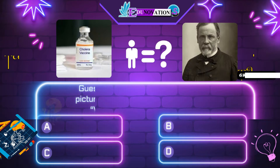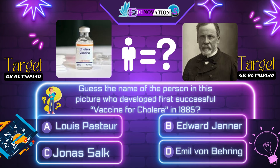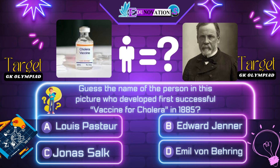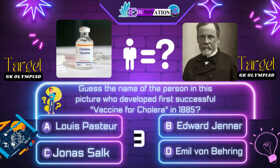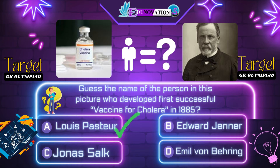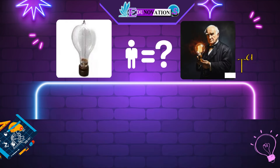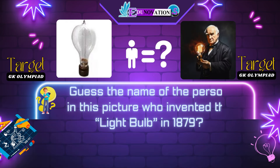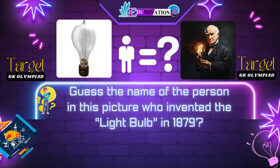Next question. Guess the name of the person in this picture who developed the first successful vaccine for cholera in 1885. Your options are: A. Louis Pasteur, B. Edward Jenner, C. Jonas Salk, D. Emil von Behring. Time's up. Correct answer is A. Louis Pasteur.